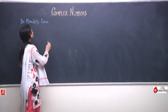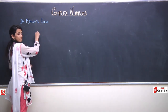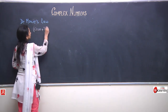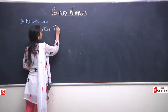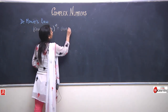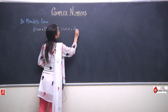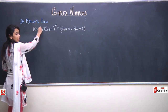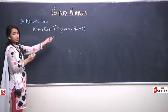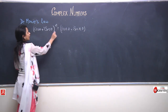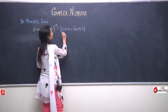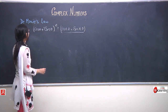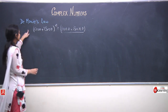We have derived a very important result related to the polar representation of complex numbers, which states that cos theta plus iota sin theta to the power n is equal to cos n theta plus iota sin n theta. This doesn't seem to be very interesting on its own, so let us try to prove some real world results using this formula.